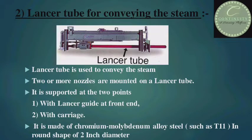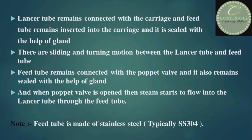Second part: lancer tube for conveying the steam. Lancer tube is used to convey the steam; two or more nozzles are mounted on a lancer tube. It is supported at two points — first, at the front end with a lancer guide, and second, with the carriage. It is made of chromium-molybdenum alloy steel, such as T11, in a round shape of 2-inch diameter. The lancer tube remains connected with the carriage, and the feed tube remains inserted into the carriage till the front end and is sealed with the help of a gland. There is sliding and turning motion between the lancer tube and feed tube. The other side of the feed tube remains connected with the poppet valve and is also sealed with a gland. When the poppet valve is opened, steam starts to flow into the lancer tube through the feed tube. Feed tube is made of stainless steel, typically SS304.